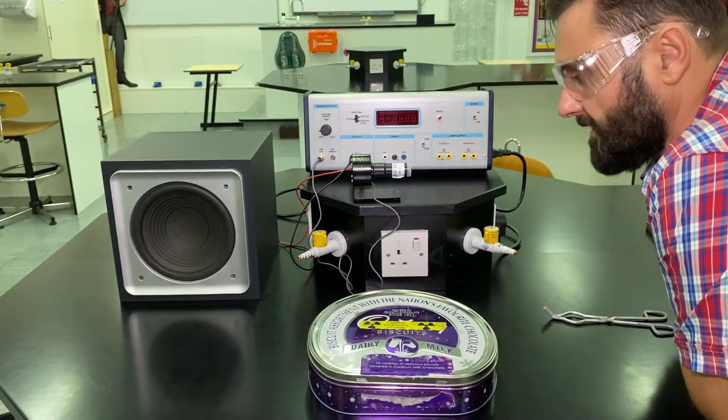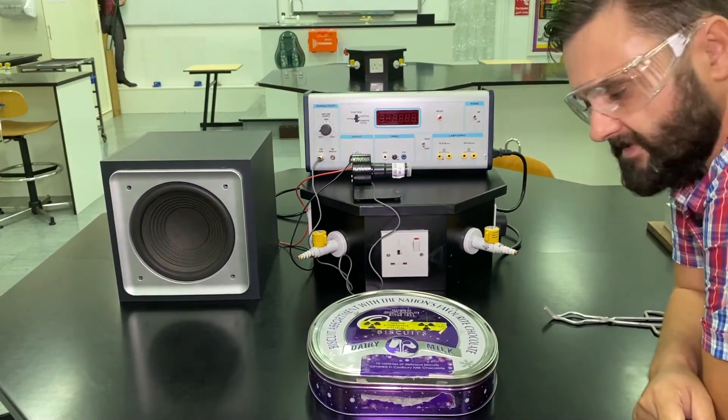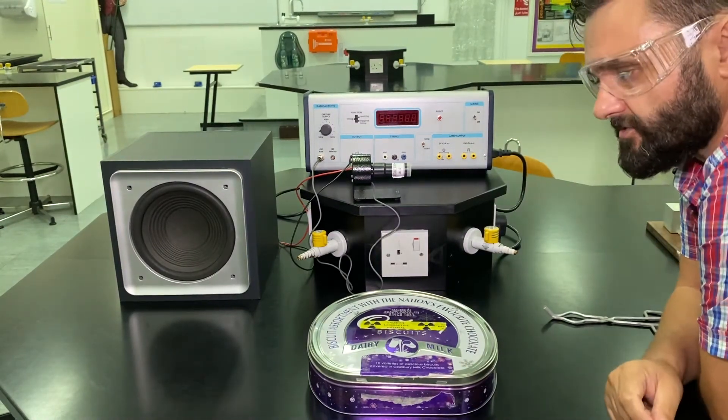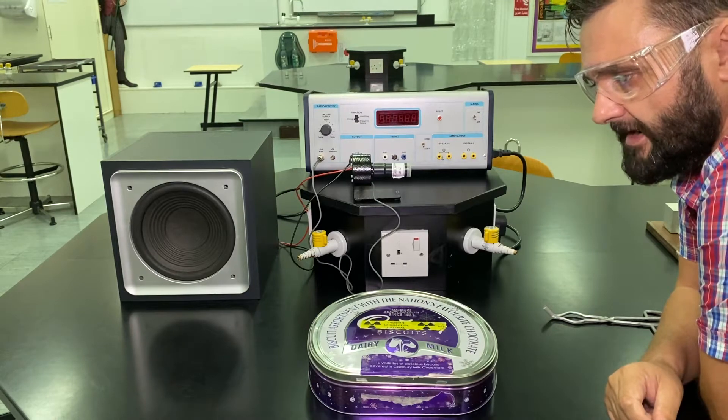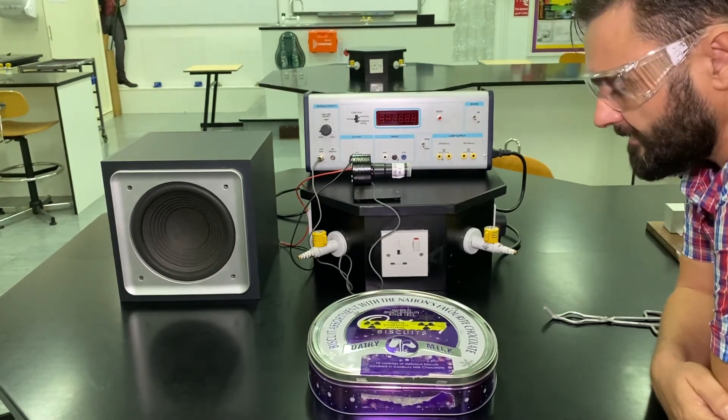Next up, I'm going to show you how the GM tube fares with some actual radioactive materials. Now we're not allowed to store in school some pure radioactive isotopes. We're not allowed any uranium or plutonium, anything like that.